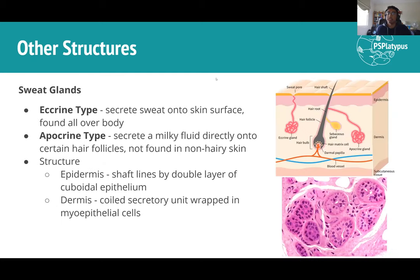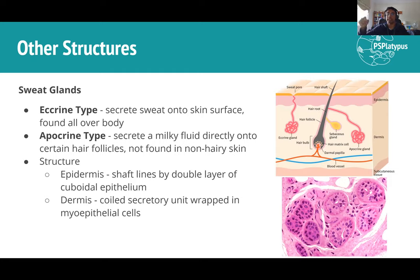Sweat glands have two types: eccrine glands put sweat directly onto the skin surface and are the normal type. Apocrine glands produce a slightly different, milky fluid and secrete onto hair follicles — found only in hairy skin. The structure shows a relatively straight duct in the epidermis lined by a double layer of cuboidal epithelium, and a coiled secretory unit in the dermis enclosed in myoepithelial cells. Sweat glands are strongly eosinophilic, appearing pink on micrographs.